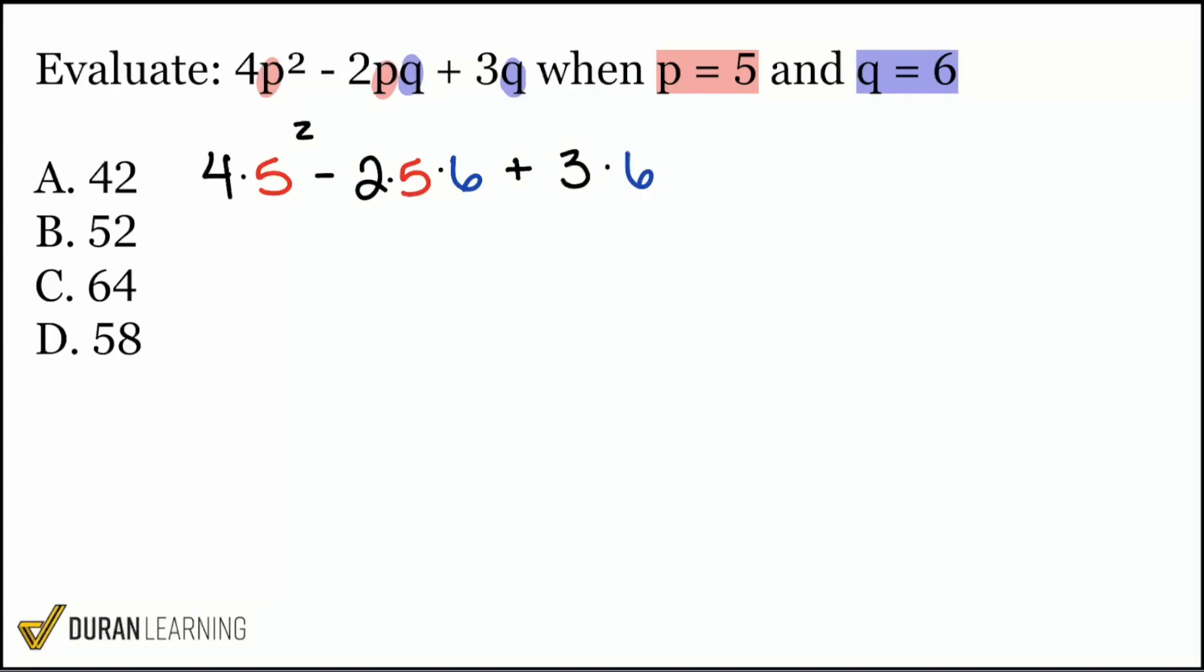Now we have to be careful with the order of operations. We have 5 squared, so we'll move on to exponents. 5 squared is 5 times 5 which is 25. So that will be 4 times 25 which will be 100.